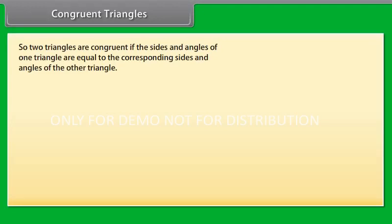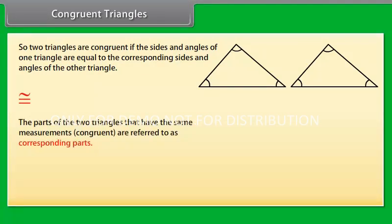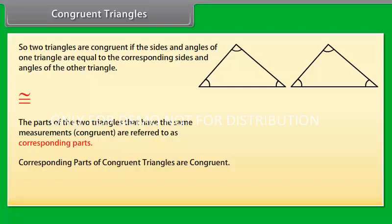Congruent triangles. Two triangles are congruent if the sides and angles of one triangle are equal to the corresponding sides and angles of the other triangle. This is the sign of congruency. The parts of the two triangles that have the same measurements — congruent — are referred to as corresponding parts. This means that corresponding parts of congruent triangles are congruent. In short form, we write it as CPCTC.